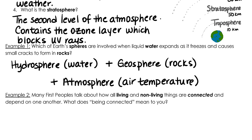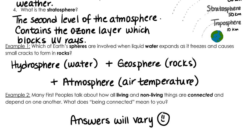Number 2: Many First Peoples talk about how all living and non-living things are connected and depend on one another. What does being connected mean to you? Your answers will vary for this one. What I'm getting at is the importance of understanding different perspectives on science, especially those of our Indigenous communities. The worldview of many Indigenous peoples includes the principle of connectivity — this idea that everything in the universe is connected. The spirit world is connected to the mortal world, the sea is connected to the land, the sky is connected to the ground, and this connectivity explains the connection that people have to the land and to their traditional territories and the ecosystems on those lands, which sustain them as a people.